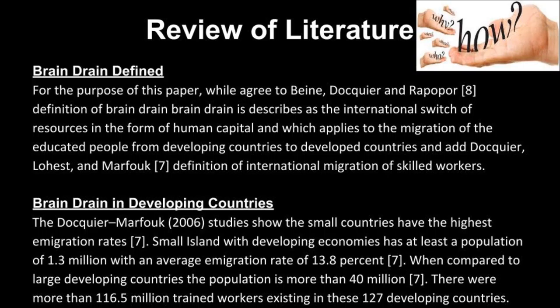Brain drain in developing countries. The Ducure-Morford 2006 studies show that small countries have the highest immigration rate. Small islands with developing economies have at least a population of 1.3 million, with an average immigration rate of 13.8%. When compared to large developing countries, the population is more than 40 million. There were more than 116.5 million trained workers existing in these 127 developing countries.